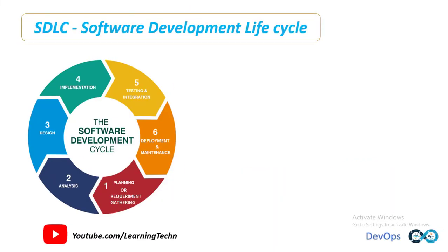Before starting to learn about the DevOps culture, we will know about SDLC and its drawbacks. SDLC stands for Software Development Lifecycle, also called the Software Development Process. The purpose of the SDLC is to deliver a high quality product. It is a framework to define tasks at each and every step in the software development process, followed and used by software organizations.